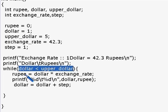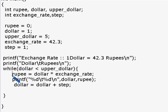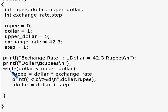Since two is less than five, we go back inside the while loop and execute all three statements again. The third statement increments dollar again — now dollar is three. Three less than five is true, so we execute the three statements again and dollar becomes four. Four less than five is still true, so we come back inside the loop, execute the statements, and dollar is incremented to five.